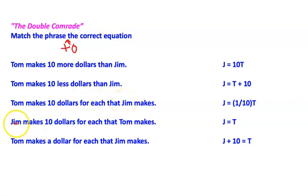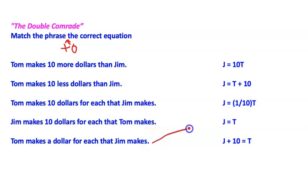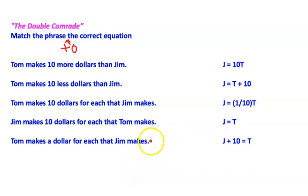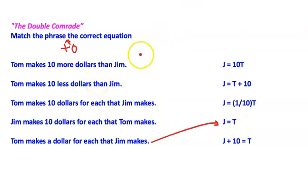Tom makes ten dollars for each that Jim makes, and then it'll flip around — Jim makes ten dollars for each that Tom makes. The easiest one to spot is the one where Tom makes a dollar for each that Jim makes — so they make the same. That's going to be this equation right here: Jim equals Tom.